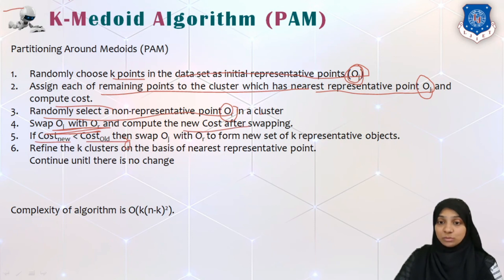So if new cost is less than old cost, then we will swap O_j with O_r. That is, the random point is now my O_j, and we can set K representative objects according to the new created medoid, and we can define the K clusters on the basis of nearest representative point. We can continue this process unless there are no changes, or we can set up another criteria such as number of iterations. That is what our simplest PAM algorithm is. The complexity of algorithm is O(K(N-K)^2).